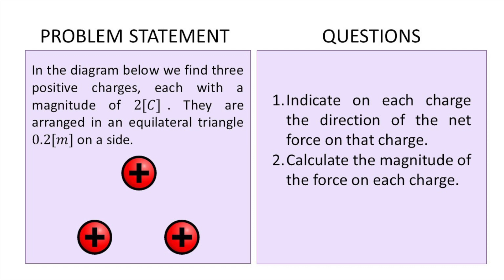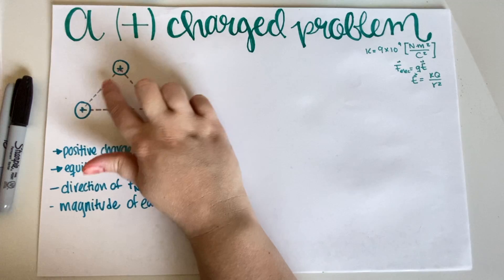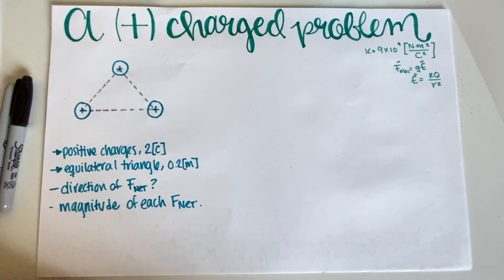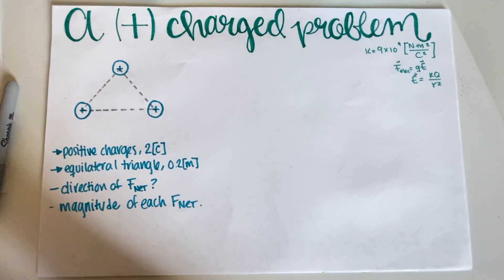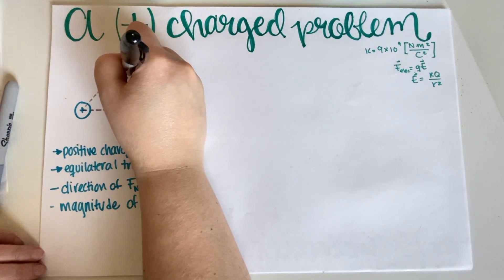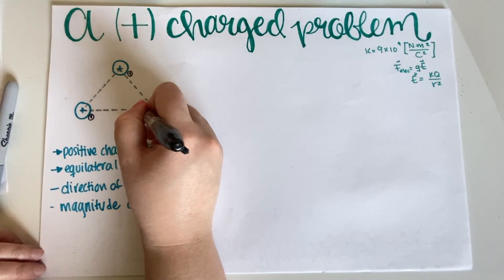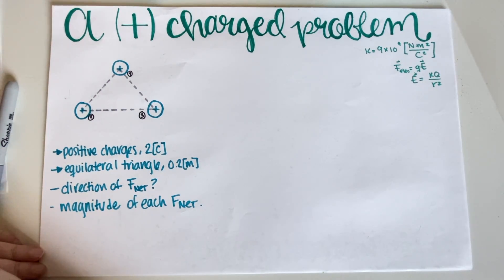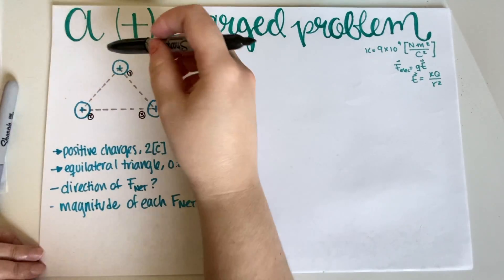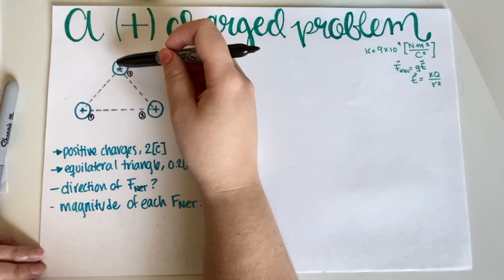This is the problem we're going to be solving today. We have a diagram with three positive charges, each with a magnitude of two Coulombs, arranged in an equilateral triangle 0.2 meters on the side. We have to indicate on each charge the direction of the net force, and also calculate the magnitude of the force on each charge. I'm going to name them: charge 1, charge 2, and charge 3.